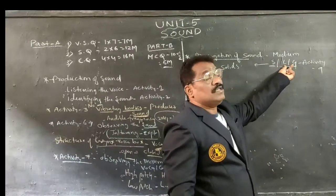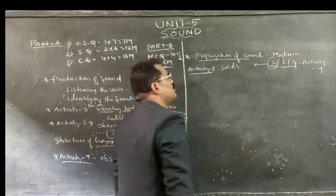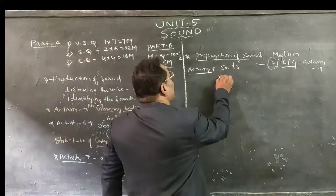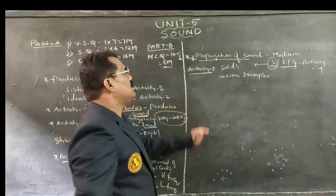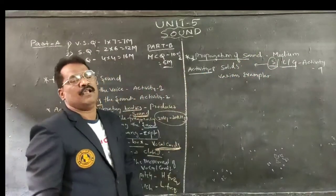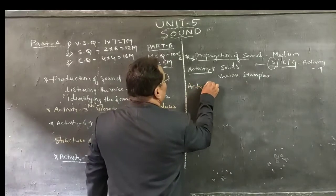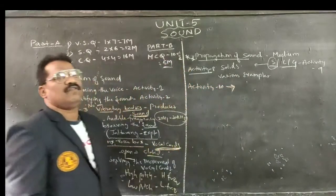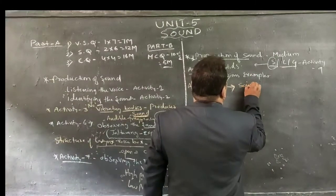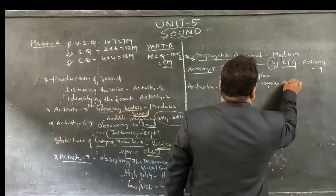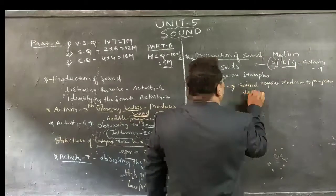Activity 9 gives information about sound being propagated through liquids as well as gases. Activity 8 explains clearly how sound can propagate through solids with various examples. That covers propagation of sound, assisted by Activity 8 as well as Activity 9. Activity 10 gives information that sound does not travel through a vacuum — sound requires a medium to propagate.